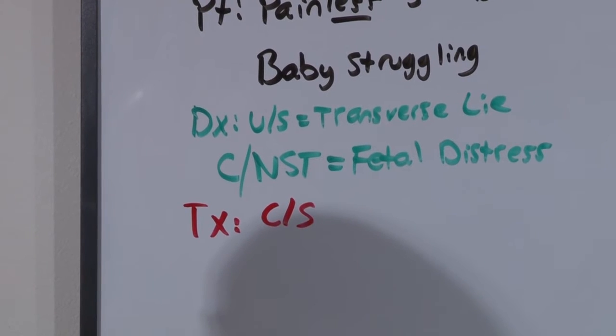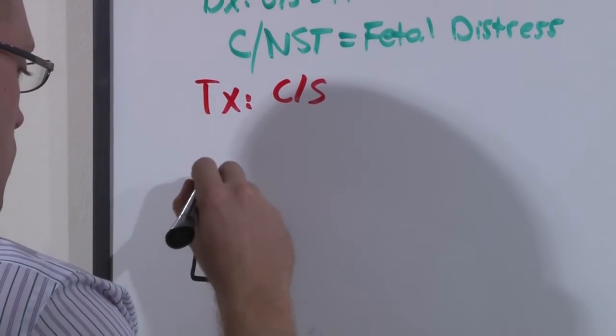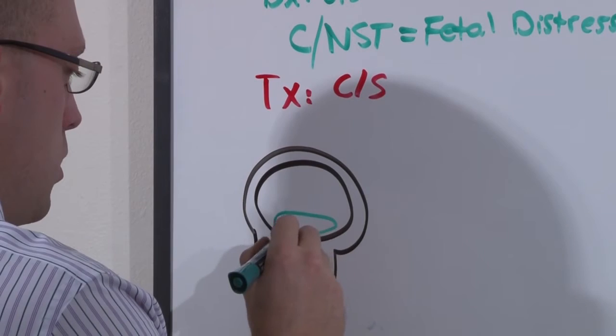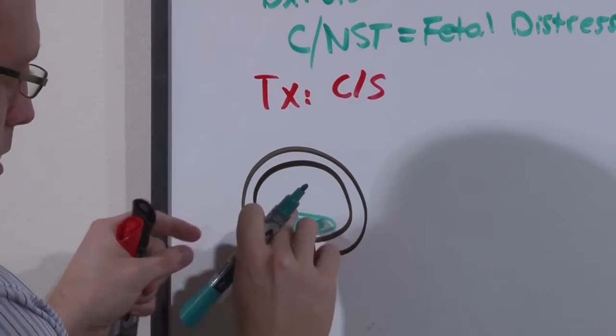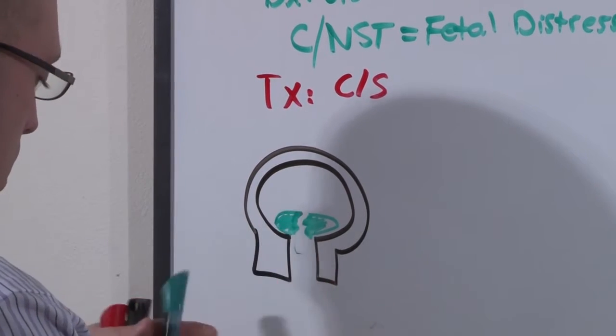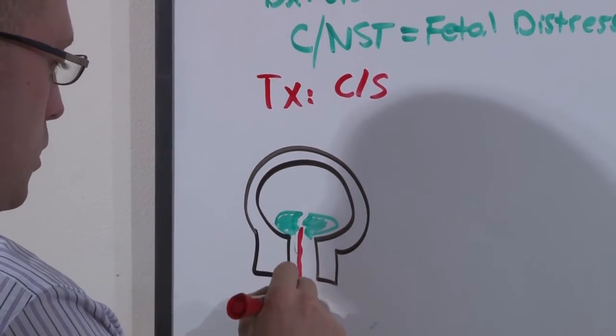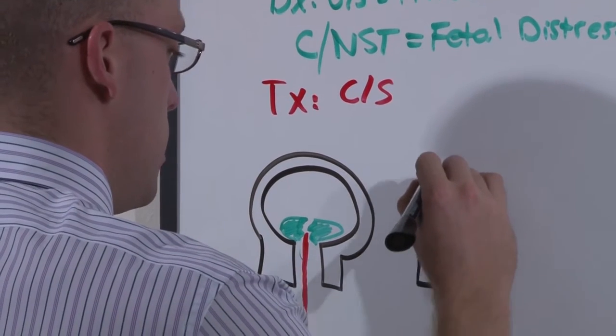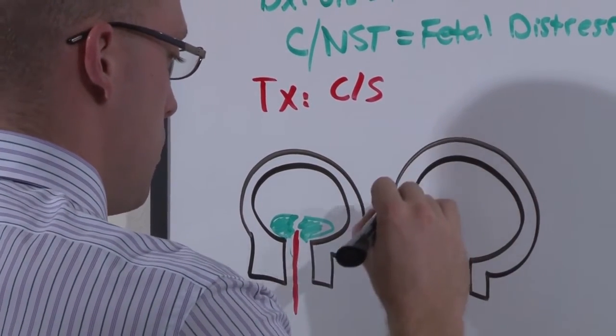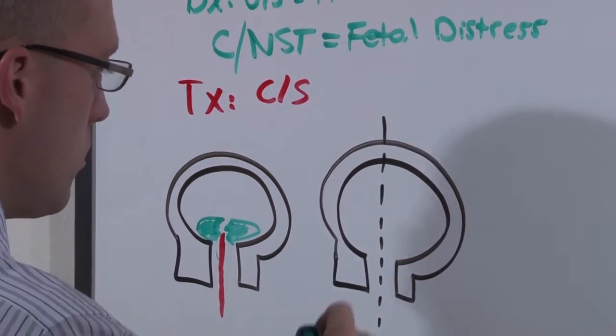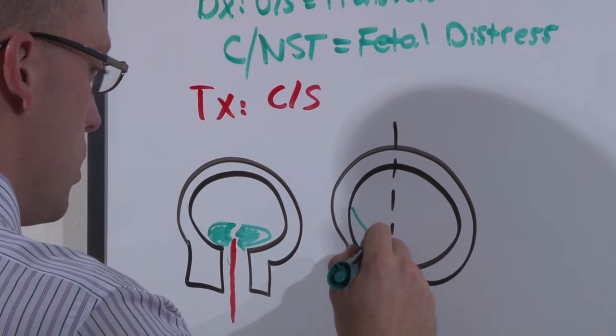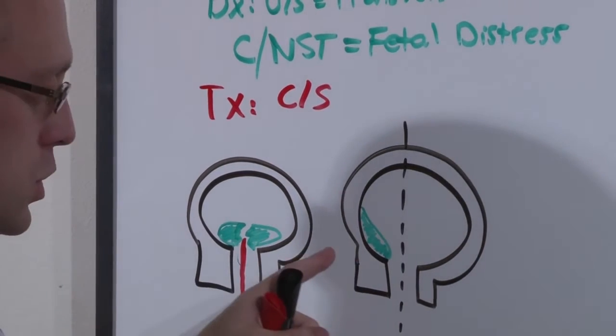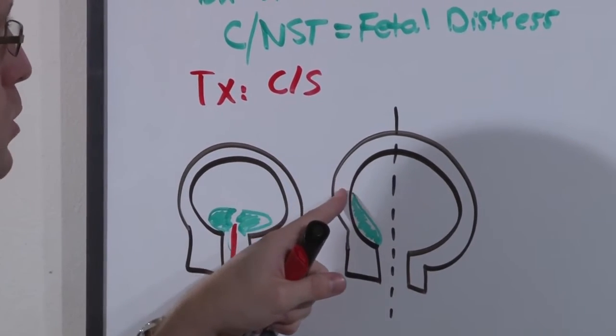This is what placenta previa looks like. This is the uterus with the placenta crossing the os. So as the os dilates, it tears the placenta and baby's blood bleeds. But there's different types of placenta previa, depending on how far in it is into the lumen or over the os. Marginal is just barely into the os. And the placenta is smarter and is dynamic than we think. What it can do is actually start implant it over the os and then migrate to a better spot on the uterus.